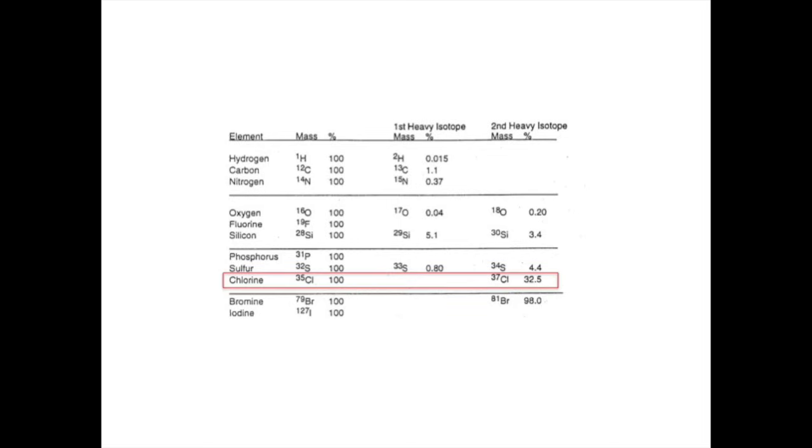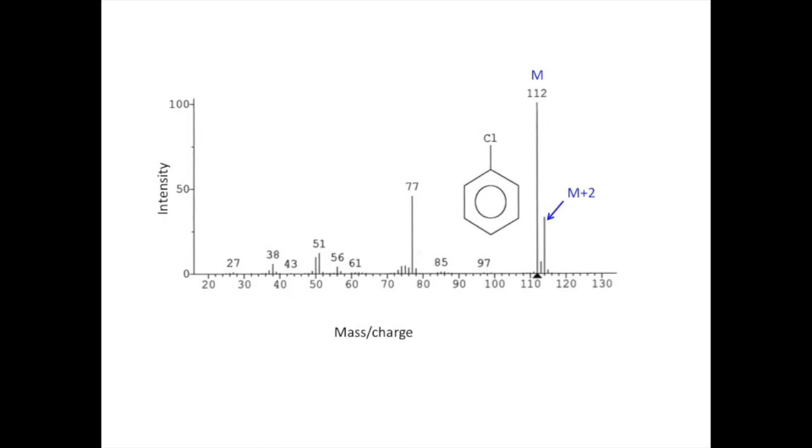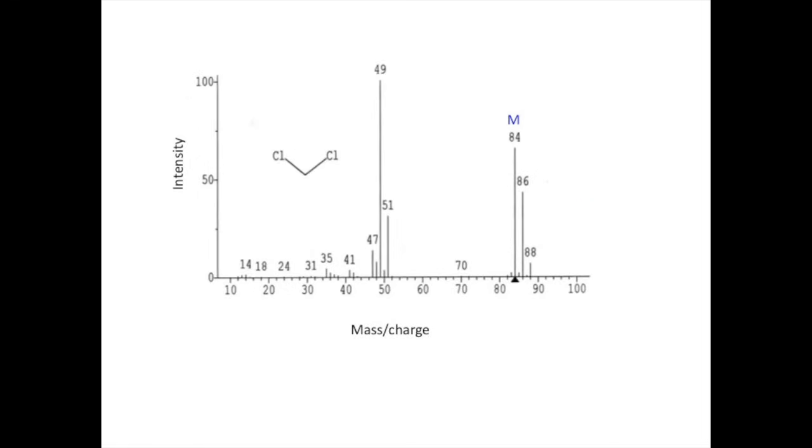Chlorine stands out from the other elements in that it has a heavy isotope two units higher than the most abundant isotope at 35. It's also distinctive because the heavy isotope is practically one-third as abundant as the light isotope. This leads to an unmistakable pattern in the high mass cluster in which a peak one-third as tall as the molecular ion appears at M plus 2. With two chlorine atoms per molecule, we see a pattern with a strong M plus 2 peak and a significant peak at M plus 4. Their relative intensities also fit a distinctive pattern roughly 10 to 6 to 1.